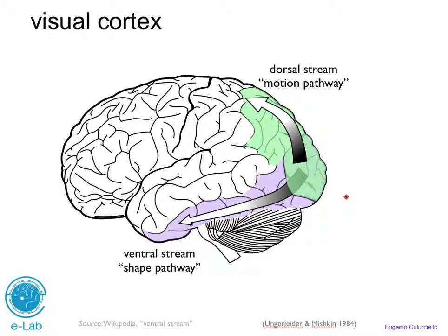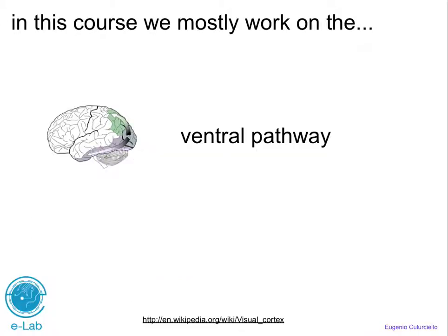We continue our lecture by studying the visual cortex, where after the eyes, information is propagated to LGN, which is more like a relay station, and then conveyed directly into the visual cortex. The visual cortex is usually divided into two areas: there's a ventral stream, the shape or object pathway, also called the 'what' pathway, and there's a dorsal stream, the motion pathway, also called the 'where' pathway, as divided by researchers.